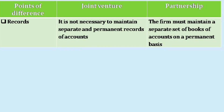The tenth difference is with regard to maintaining records. In a joint venture, it is not necessary to maintain separate and permanent records of accounts, as the business is for a specific purpose and for a specific period. Whereas in case of a partnership firm, the firm must maintain a separate set of books of accounts on a permanent basis as it is continuous in nature. These are the important differences between joint venture and partnership.